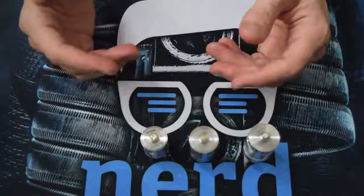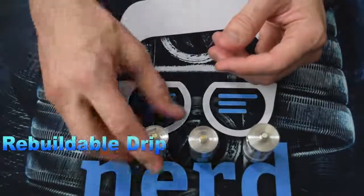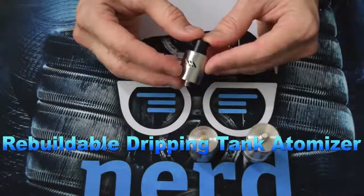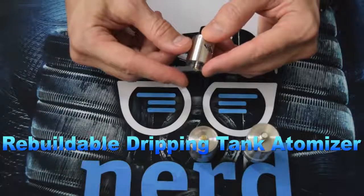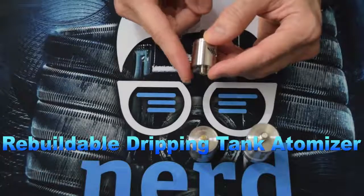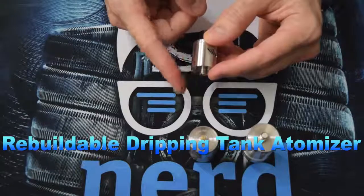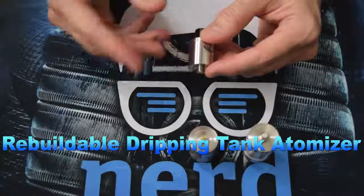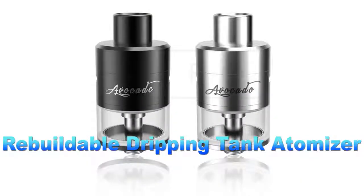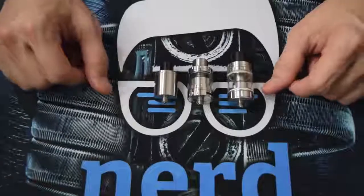Now the fourth one, unfortunately I do not have an RDTA but essentially it's the same thing as what you saw here on the RDA except for the fact that there'll be a clear glass tank on the bottom of it and the wicks will actually go down into that to be able to pick up the juice and go to the wick. Now since I don't have one I'll just put a picture up on the screen so you can see what I'm talking about. And those are the different types of atomizers.